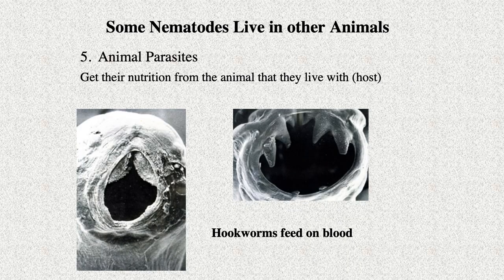There are also a large number of nematode species that get their nutrition from feeding within another animal as a parasite. The nematodes shown here are hookworms that feed on blood while living in the intestine of their host. Another type of parasite you might be familiar with if you have a dog is the dog heartworm. It is transmitted to dogs by certain mosquitoes, which is why you give your dog a monthly medication to prevent the juvenile parasite from developing.